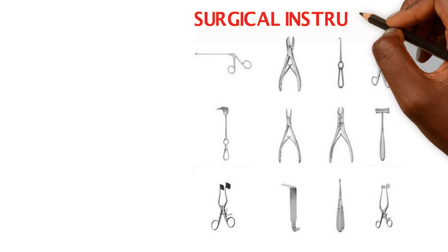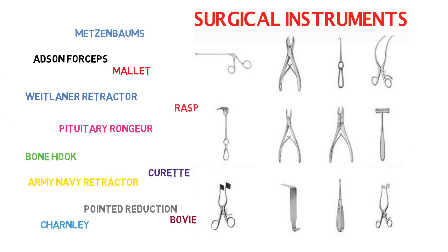I mean a lot of instruments. There are bone hooks, there's a bovie, rasp, mallets, forceps, osteotomes, rangiers, to name a few. At any time, there can be a hundred or more various surgical instruments on the operating room table to be used during surgery.